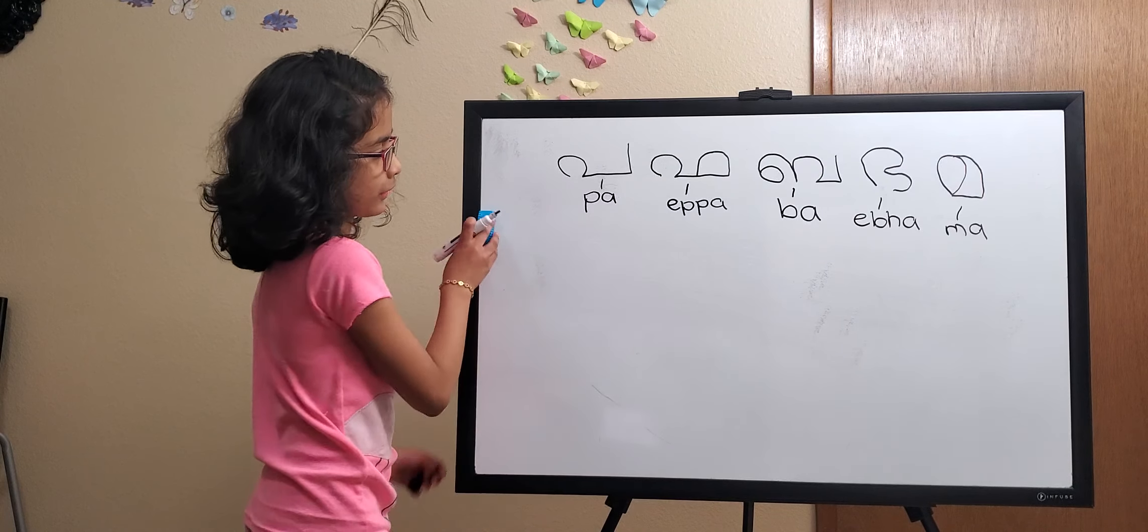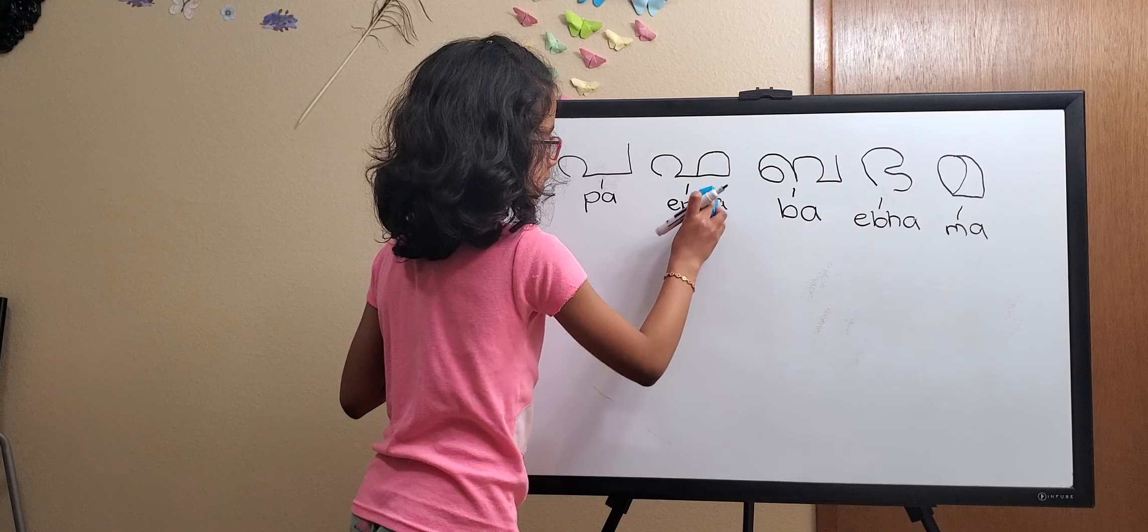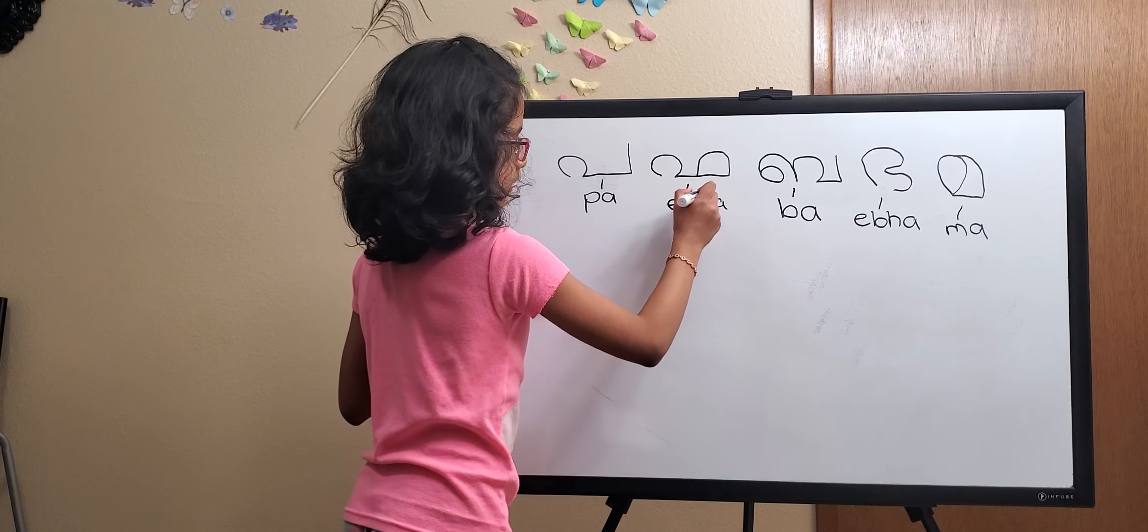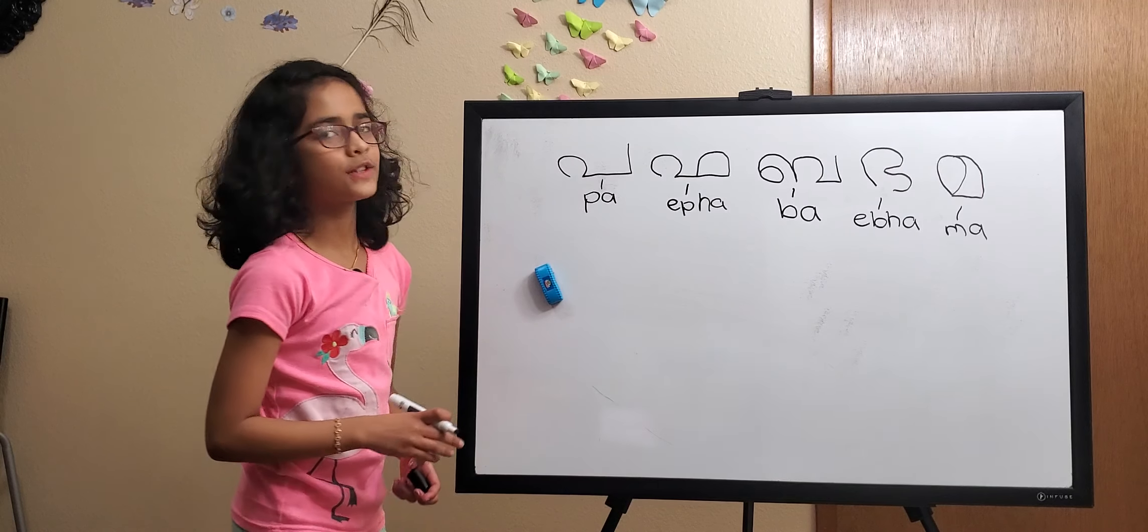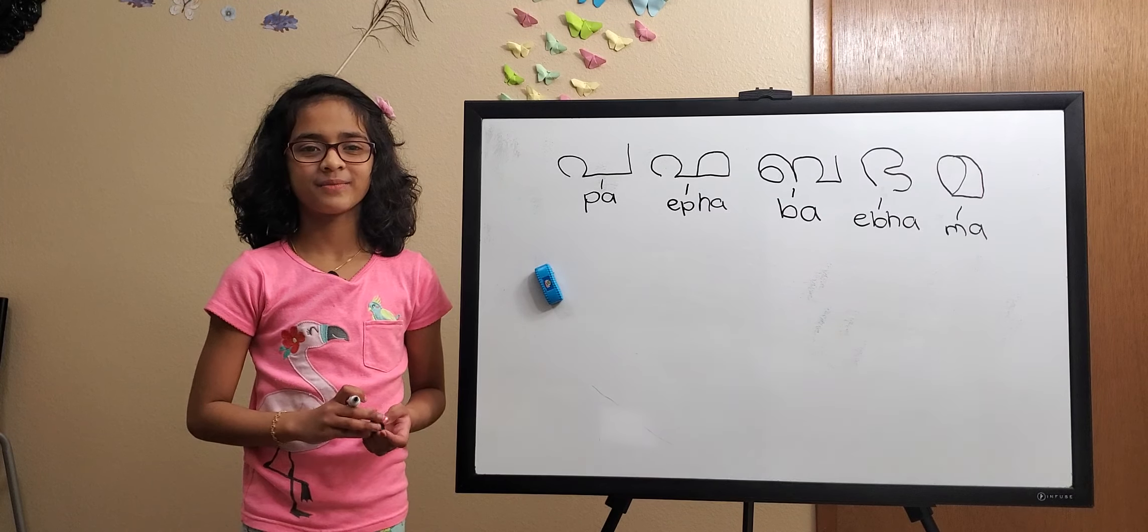If you actually want to make it a little more accurate, I would change this P into an H, IPPA. So that's it for today. Next time we'll learn the next five letters. Bye.